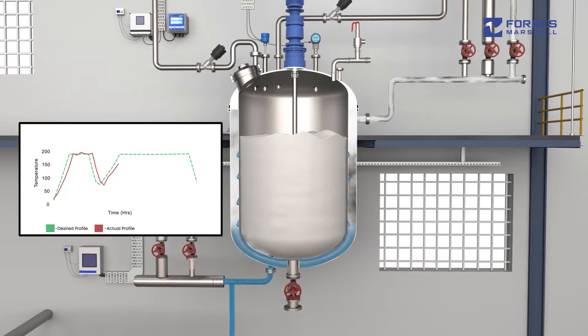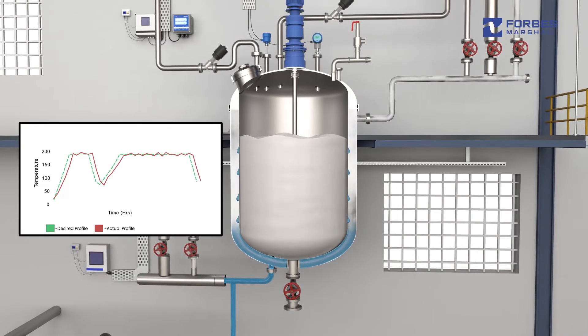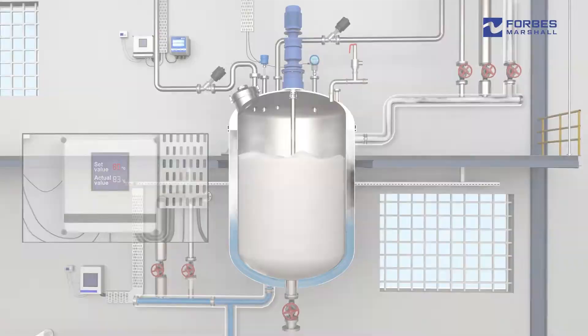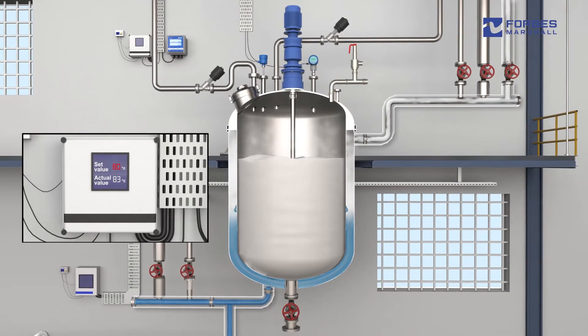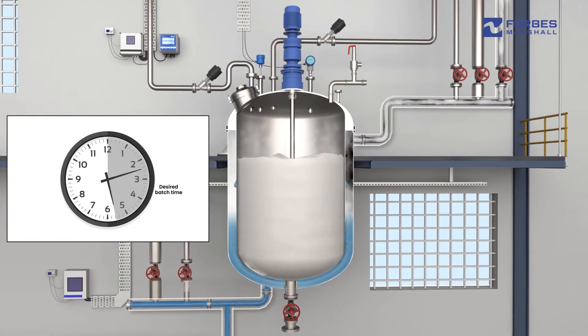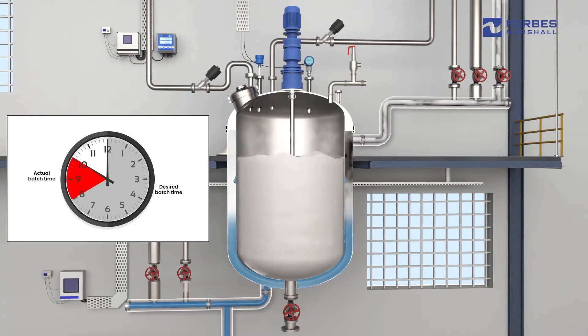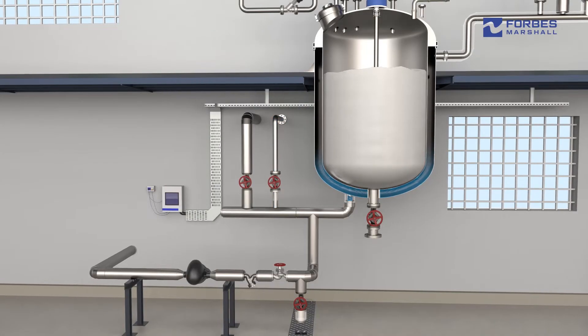Conventional utility hookups can cause fluctuations in heating and cooling profiles, temperature overshoots, inconsistencies in batches, and contamination between utilities.